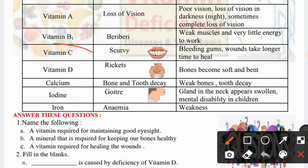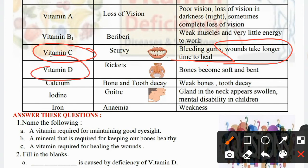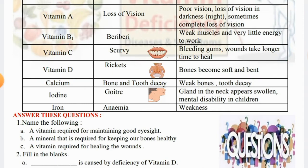Vitamin C is important for us because it helps in the healing of wounds. Vitamin D — the disease is rickets, which causes bent bones. Vitamin D is very important for our bones.